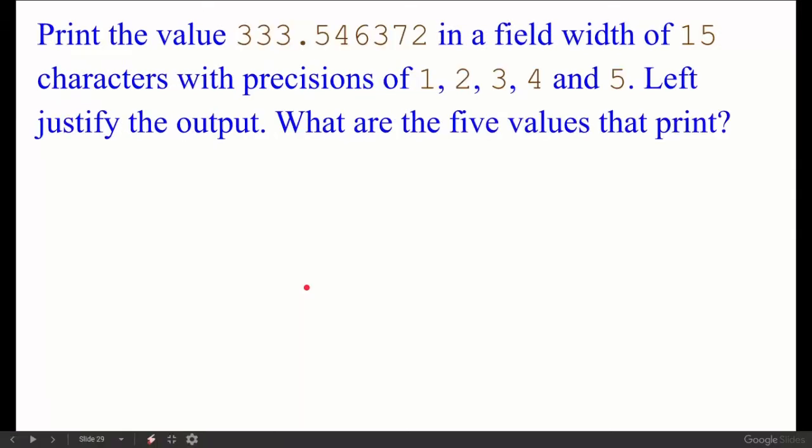Print the value 333.546372 in a field width of 15 characters with precision of 1, 2, 3, 4 and 5. Left justify the output. What are the 5 values that print?